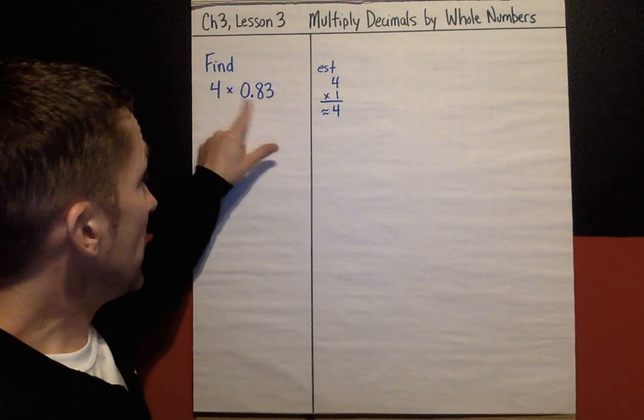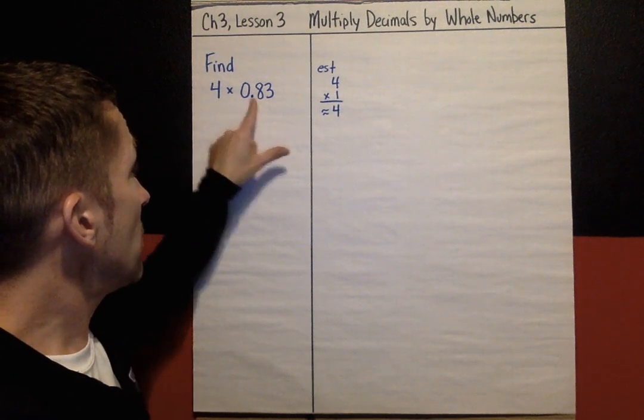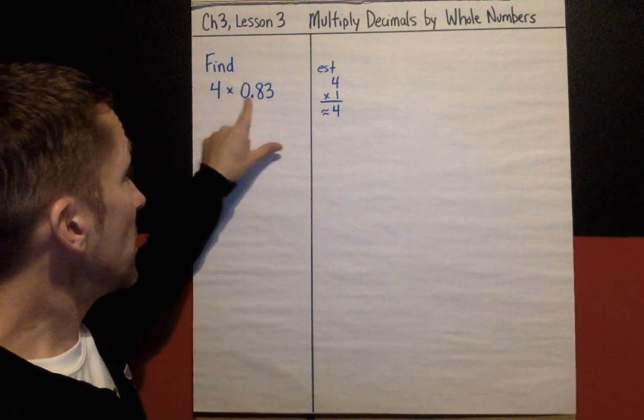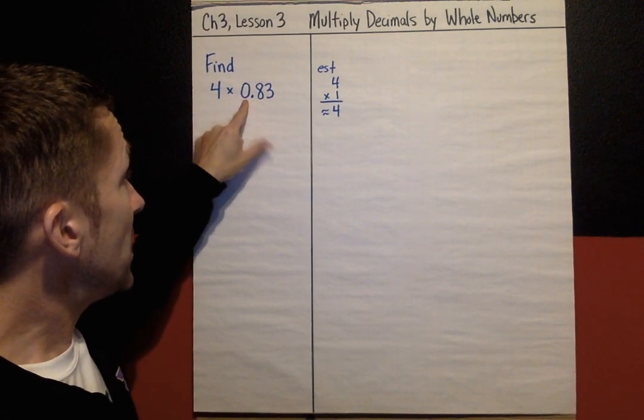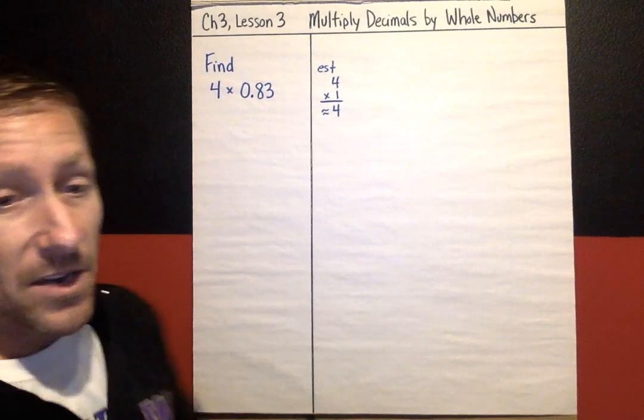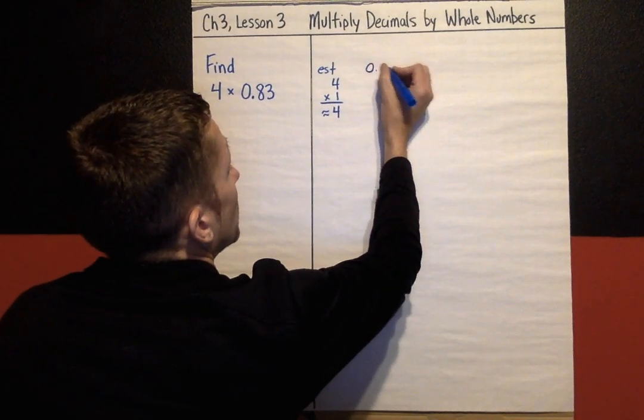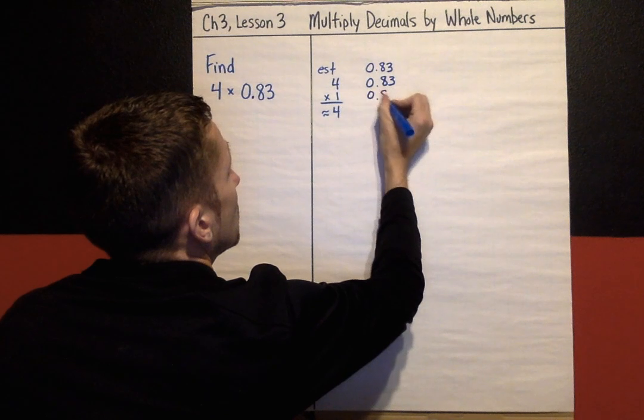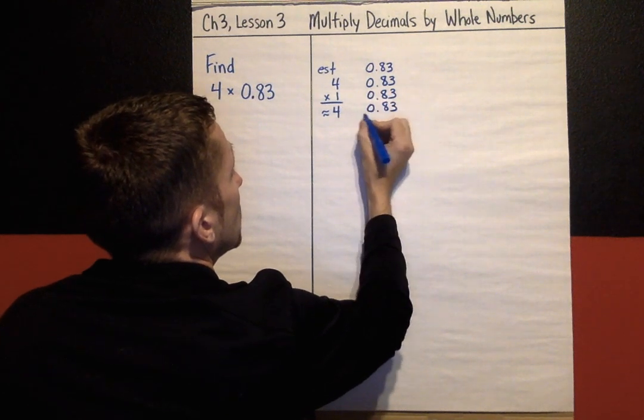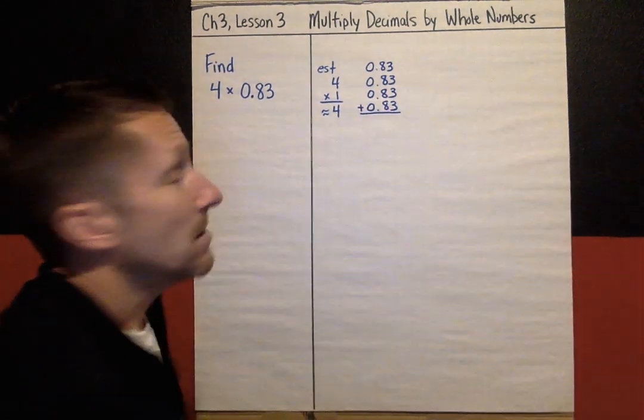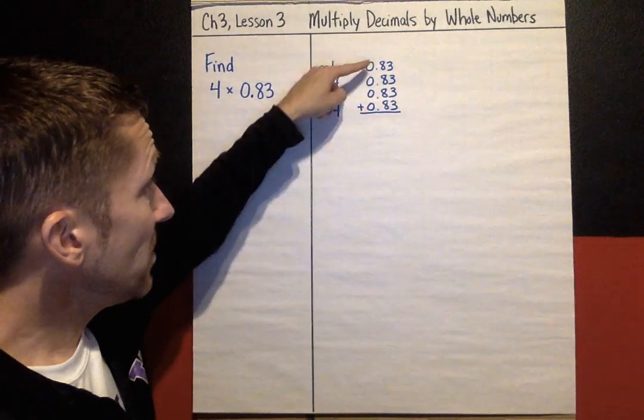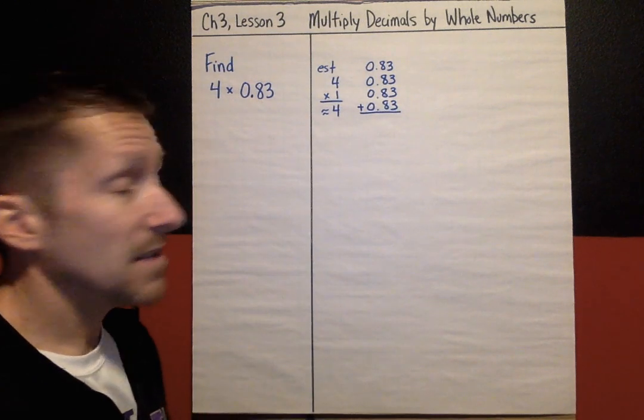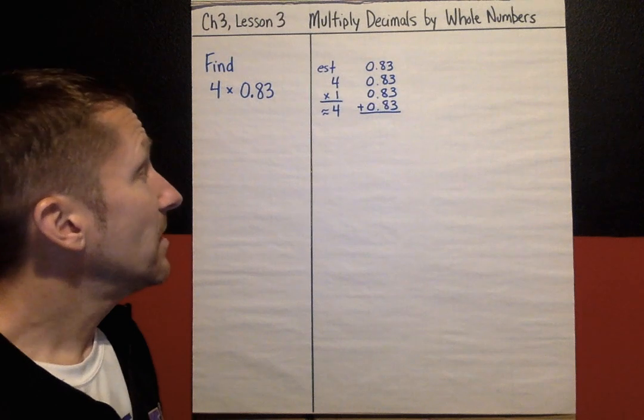Before we get into multiplying, I just want to remind you that when you are multiplying, another way that you could do that is repeated addition. So 4 times 0.83 means 0.83 four times. I could write 0.83 four times and add that up. That would be the same thing. Repeated addition is the same thing as multiplying. Multiplying is the shortcut of repeated addition.